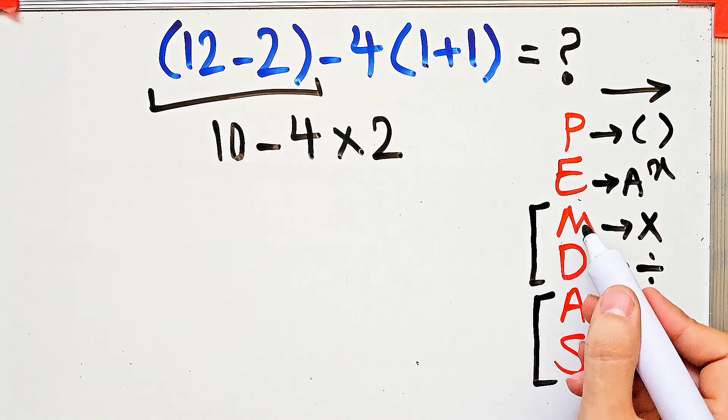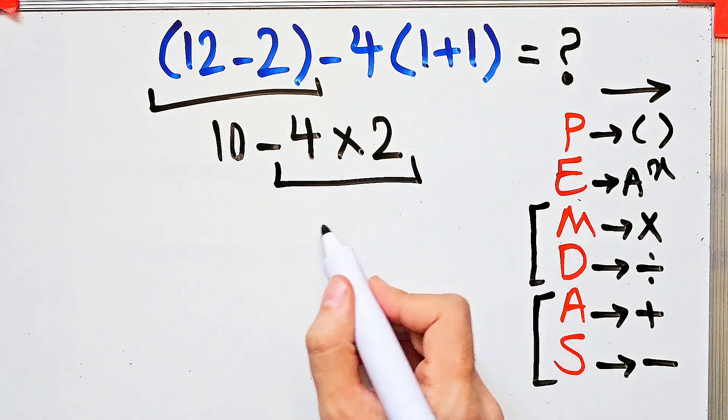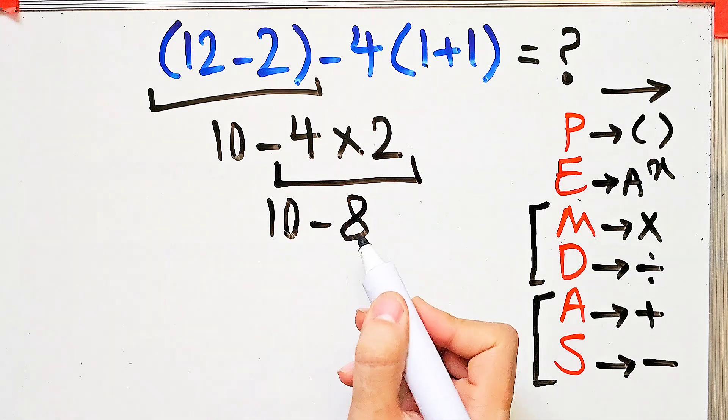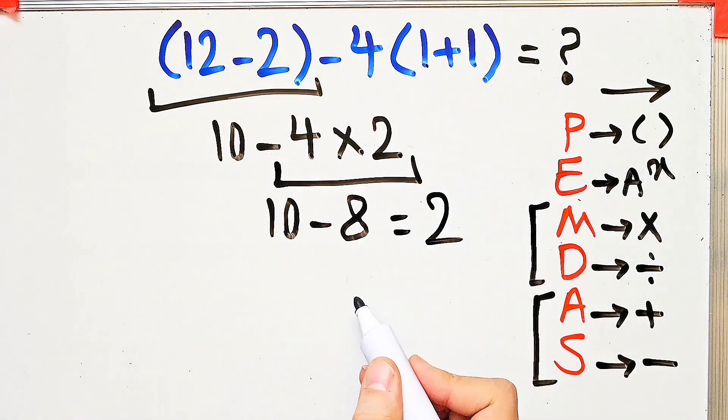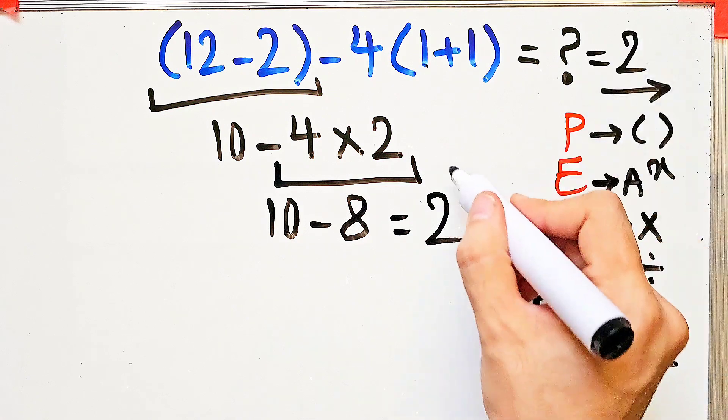Negative 4 times 2 equals negative 8, and 10 minus 8 equals 2. The final answer of this question equals 2.